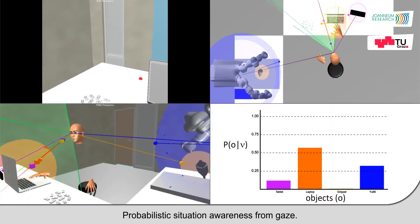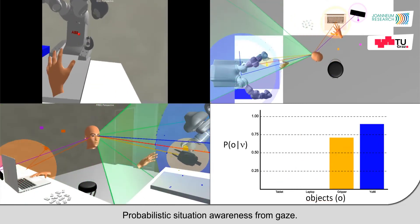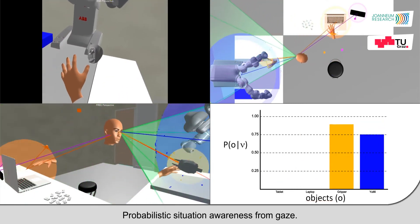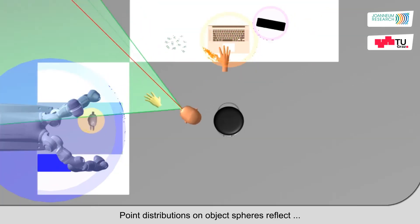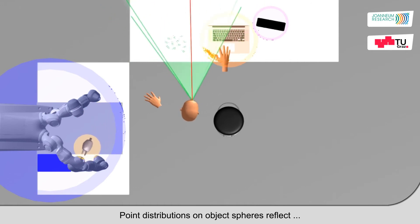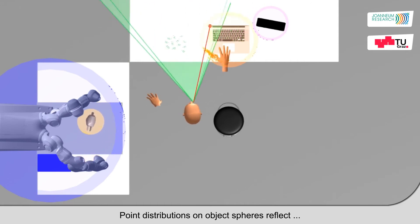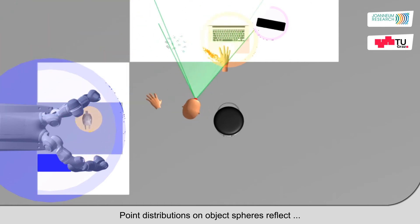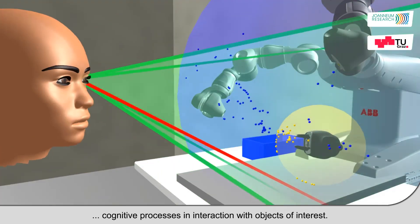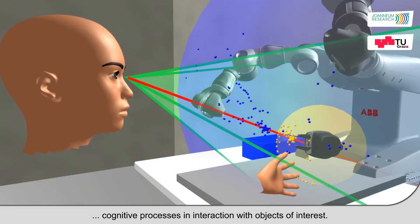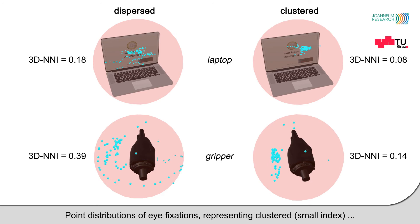Probabilistic situation awareness from gaze: point distributions on object spheres reflect cognitive processes in interaction with objects of interest. Point distributions of eye fixations represent clustered or dispersed viewing behavior.